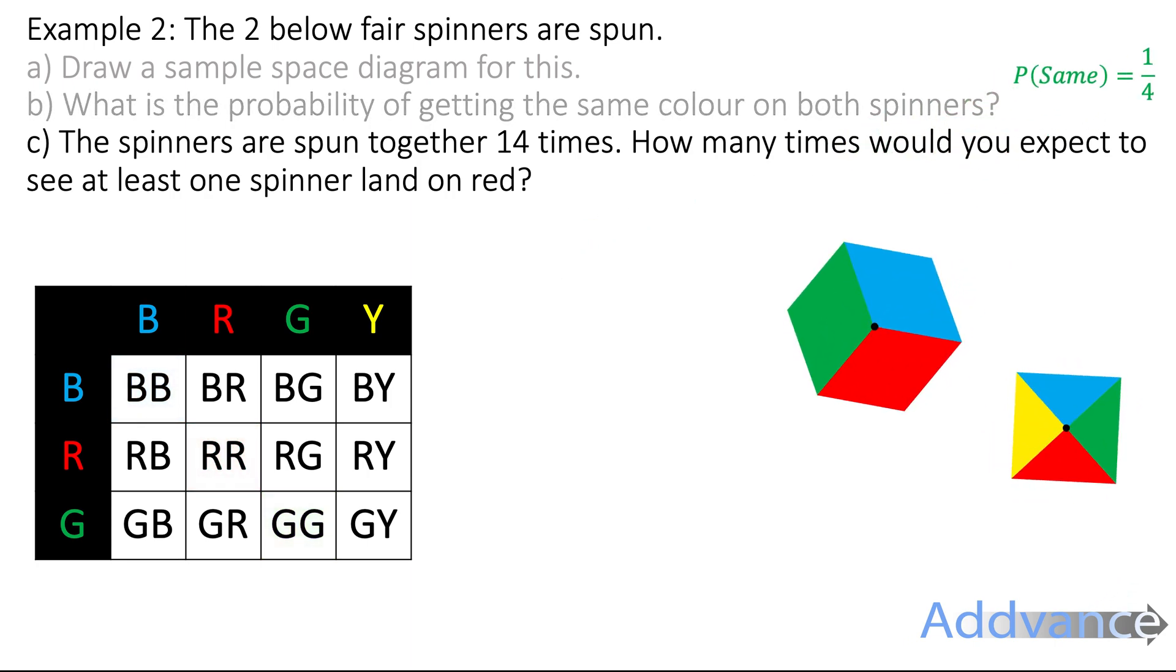Now, the spinners have spun 14 times. How many times would you expect to get at least 1 red? Let's highlight all the times you get at least 1 red. At least means 1 red or more. So, you could get 2 reds as well. That also counts. I've highlighted in red all the combinations that have 1 red.